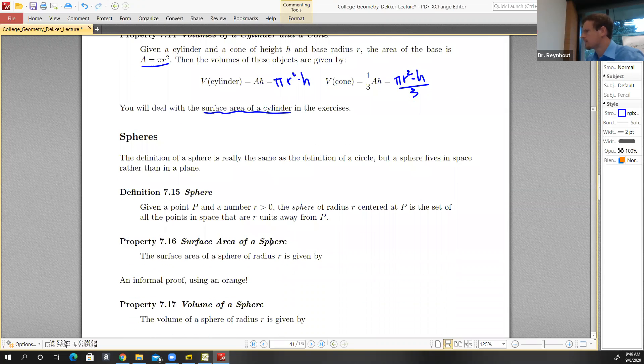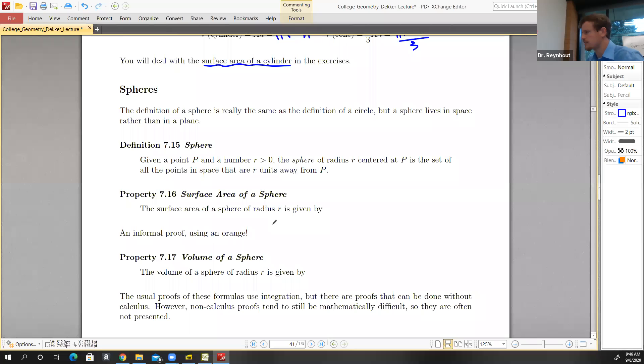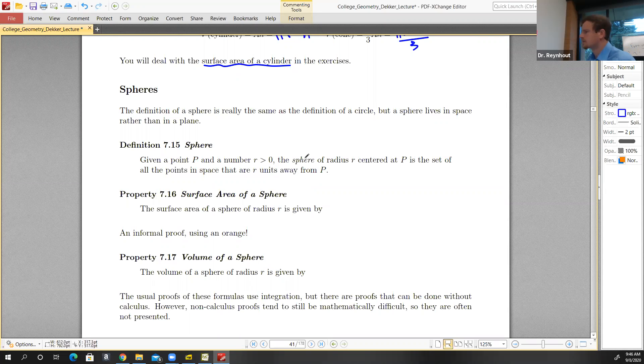Spheres. What is a sphere? A sphere is pretty much the same thing as a circle, but it's in three dimensions instead of two dimensions. A sphere is the collection of points that are all a fixed distance away from a fixed point. The sphere of radius r, centered at point p, is all the points that are the fixed distance r away from the point p.